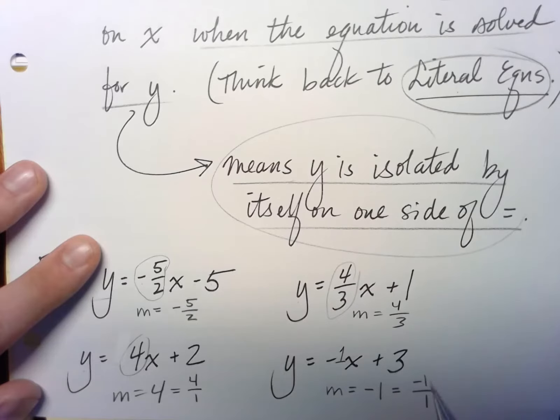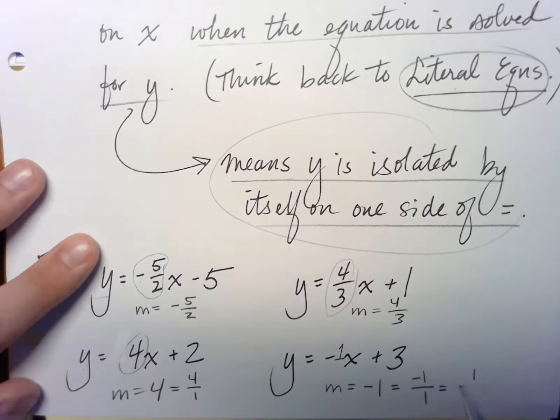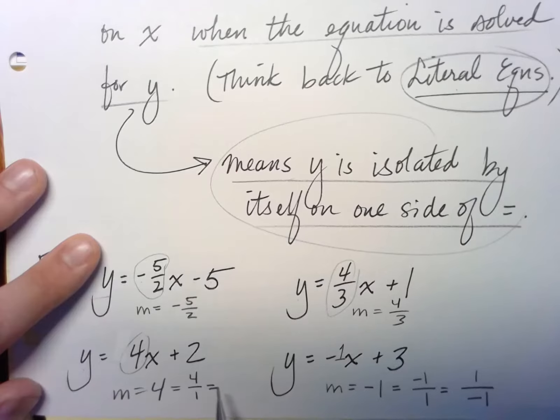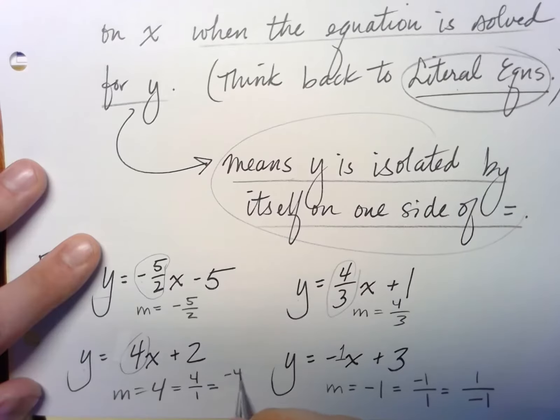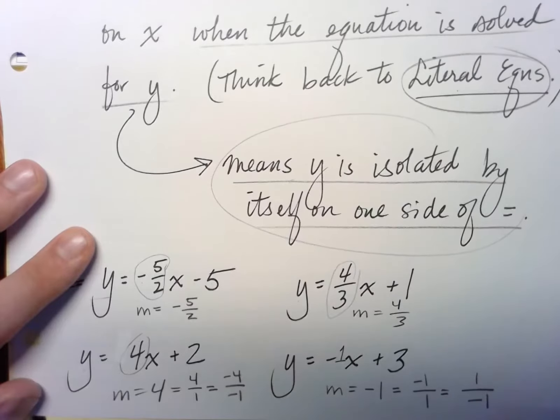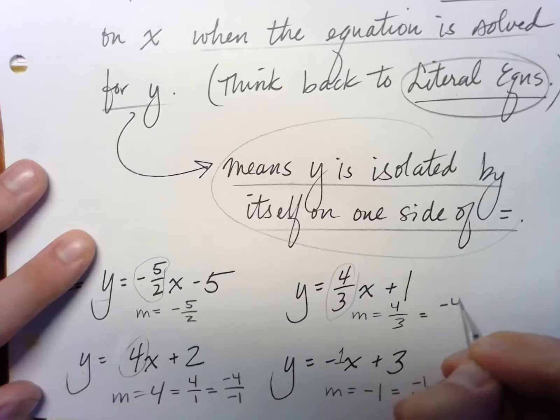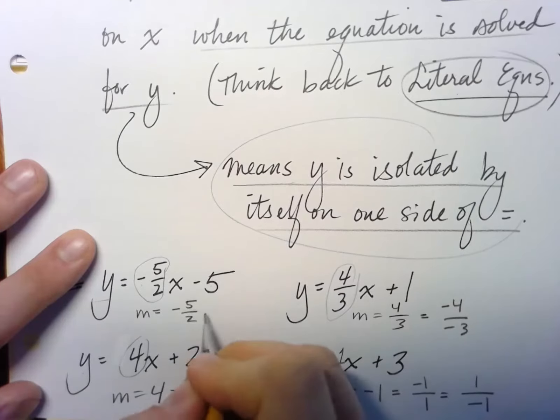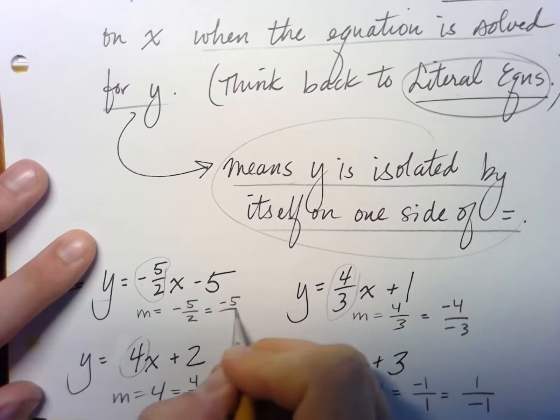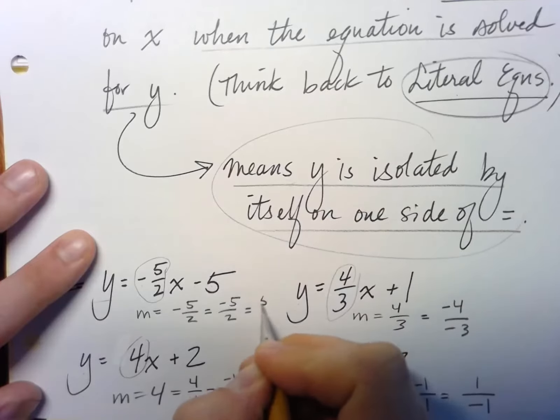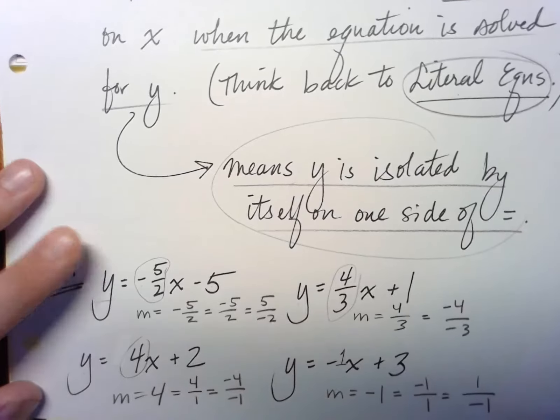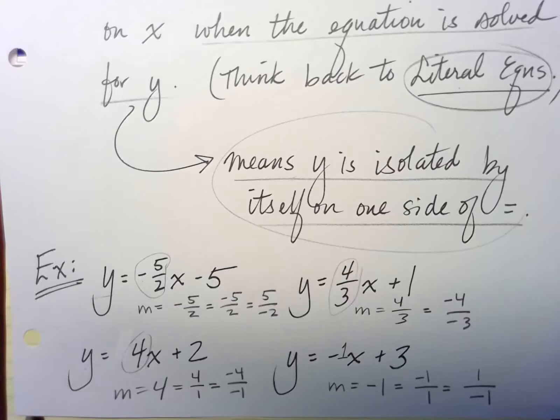If you want to do rise over run, which, of course, is the same as 1 over negative 1. This one could also be thought of as negative 4 over negative 1, because they all equal the same thing. This could be negative 4 over negative 3. This could be negative 5 over 2. This could be 5 over negative 2. They all mean the same thing. So just think about working your fractions and your knowledge of fractions when you're doing this. Great.